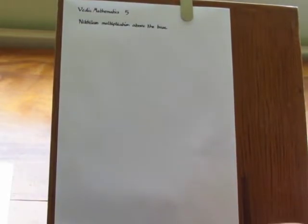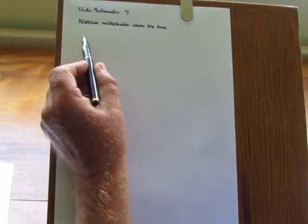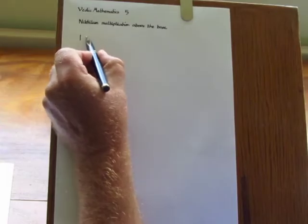In this session we're going to look at how to multiply numbers a little above the base. In the previous session we looked at how to multiply numbers below the base. So we'll start with the example 12 times 13.